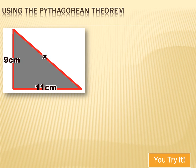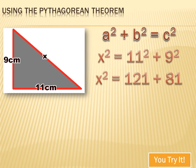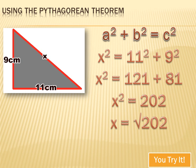We're asked to determine the length of the hypotenuse in this right triangle. So let's use the Pythagorean theorem: a squared plus b squared equals c squared. Substituting 9 for a and 11 for b, x squared equals 11 squared plus 9 squared, which is 121 plus 81. So x squared equals 202, and x equals the square root of 202, which is approximately 14.21 centimeters.